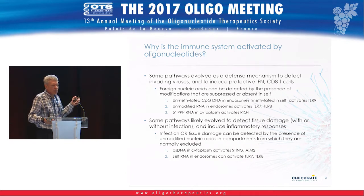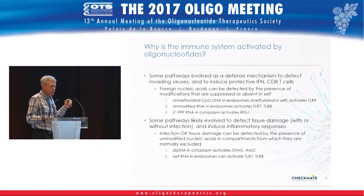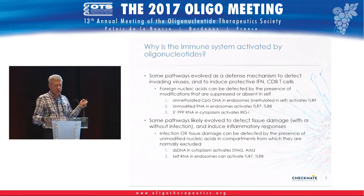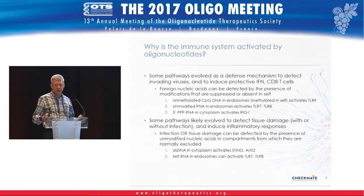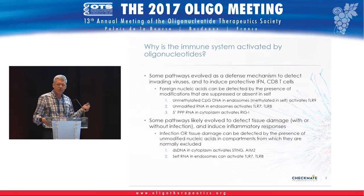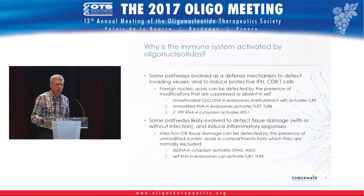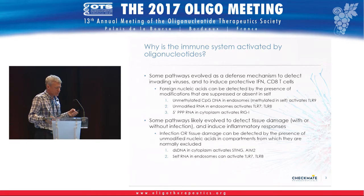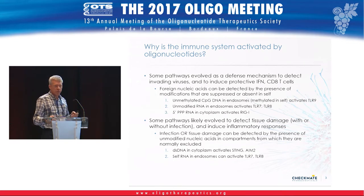An example of that type of mechanism might be the detection of double-stranded DNA in the cytoplasm. Normally double-stranded DNA is present in the nucleus. If it's detected in the cytoplasm, that's a sign that something is wrong — not necessarily an infection, although it could be. Several pathways have evolved to detect that, including AIM-2.